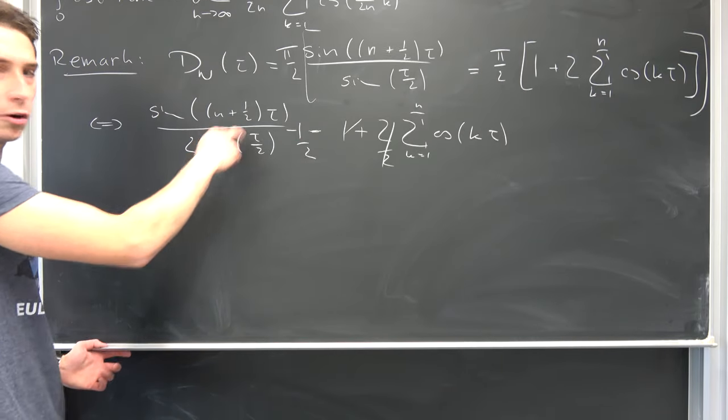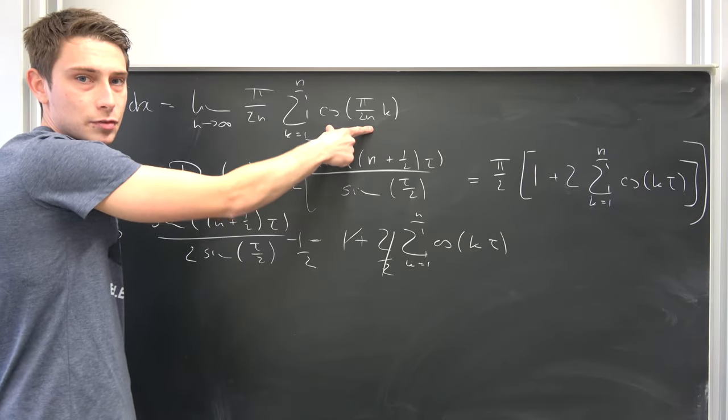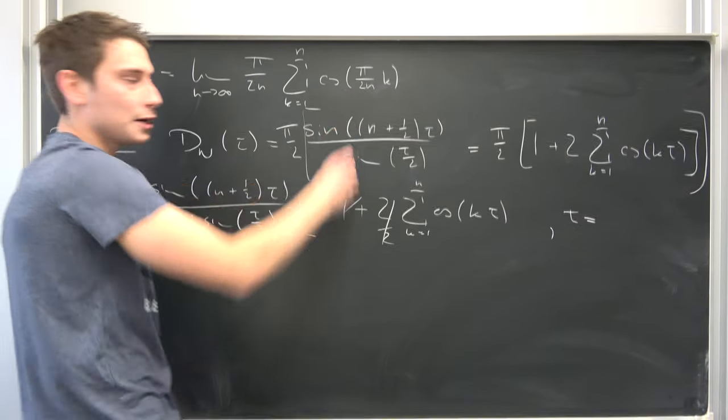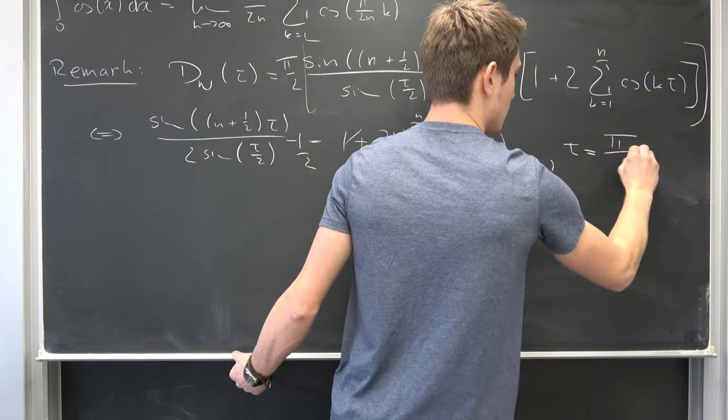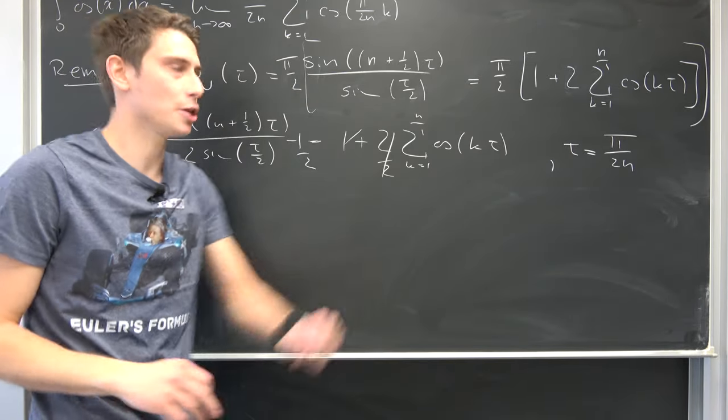So we have sine over 2 times another sine minus 1 half being equal to exactly this thing where our tau is now going to be equal to pi over 2 times n. And this is absolutely brilliant because this just works like an absolute charm.